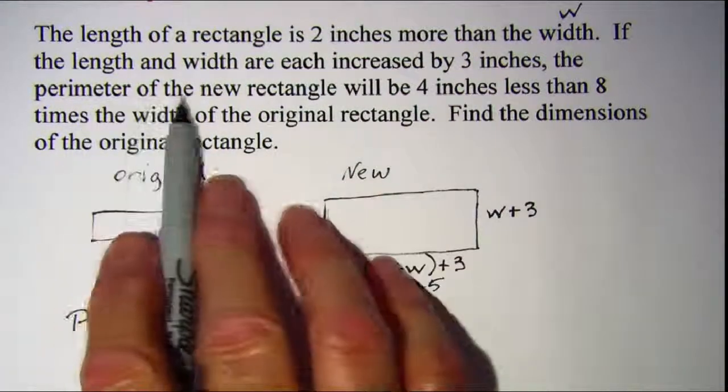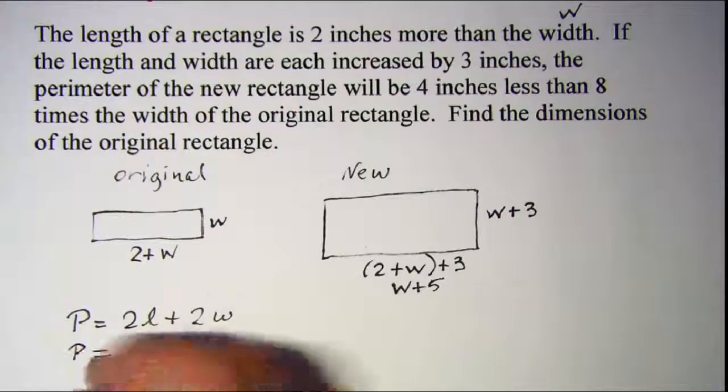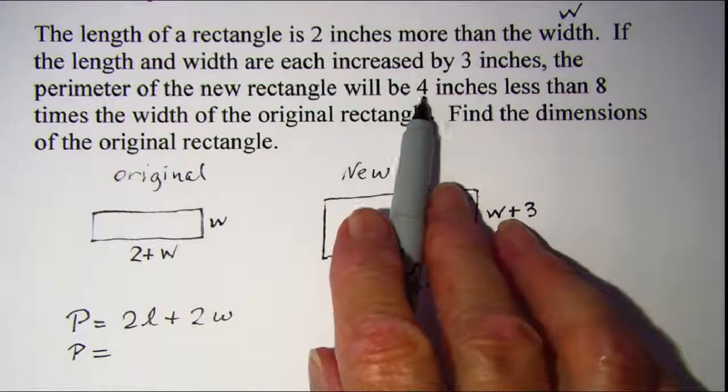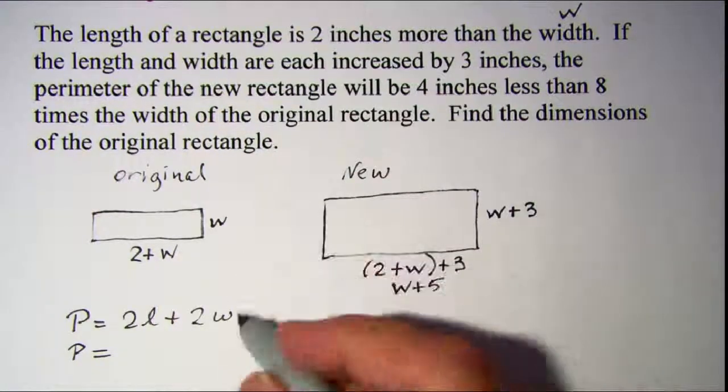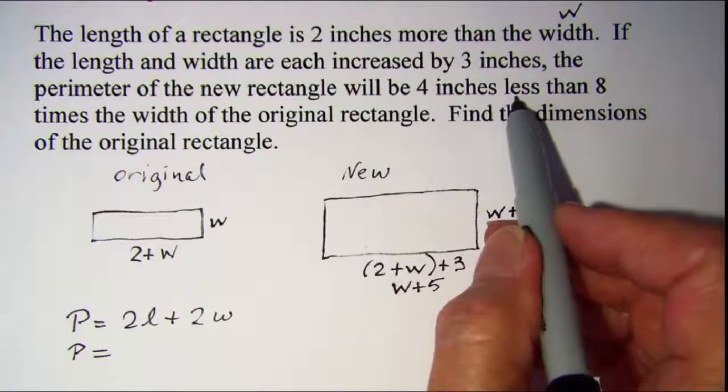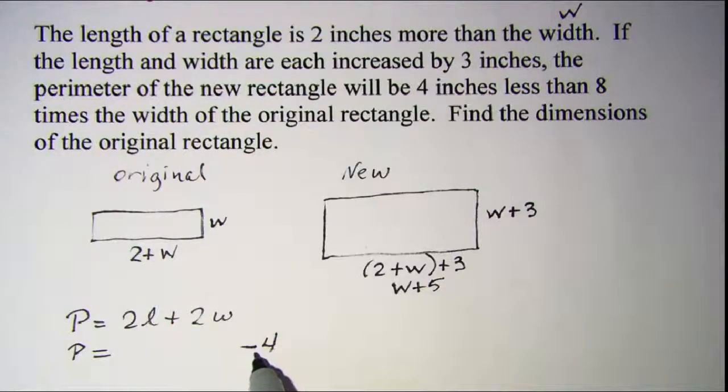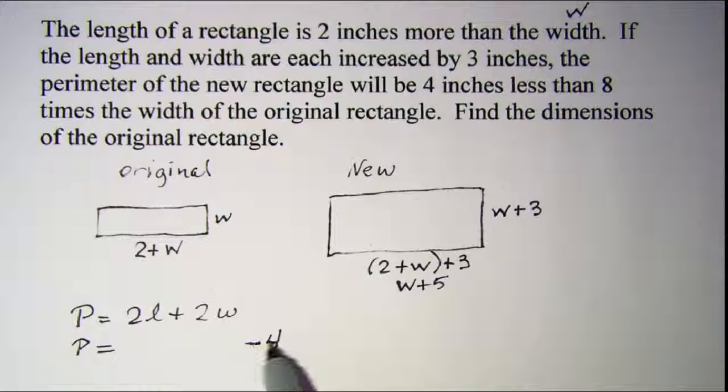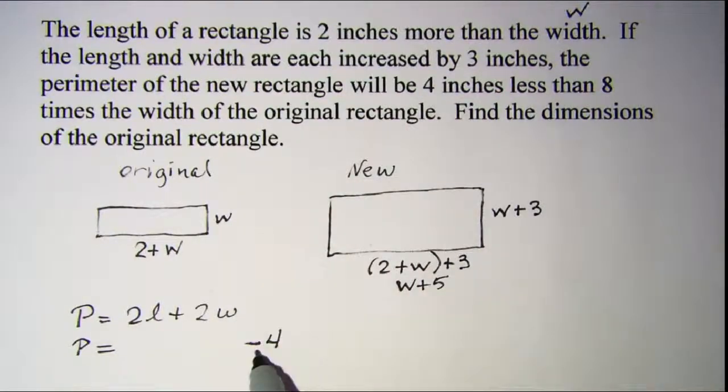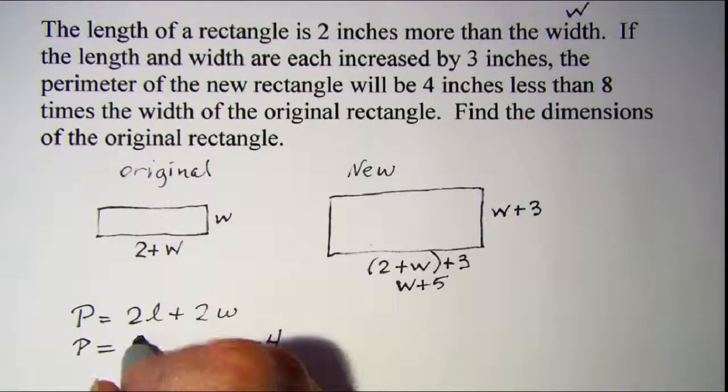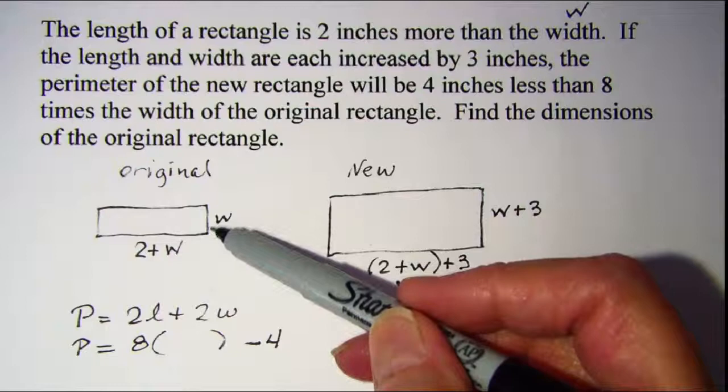And we're saying then that the perimeter will be four inches less than—so four less than—whenever you see the words 'less than' you've got to be careful. Scoot that four over, so you're going to be subtracting four from something. So four less than eight times the width of the original rectangle, so four is subtracted from eight times the width of the original rectangle, which we said was w. So that's 8w - 4.